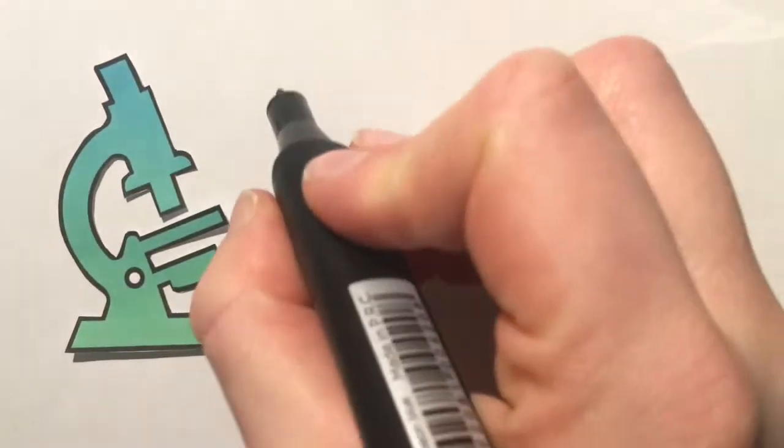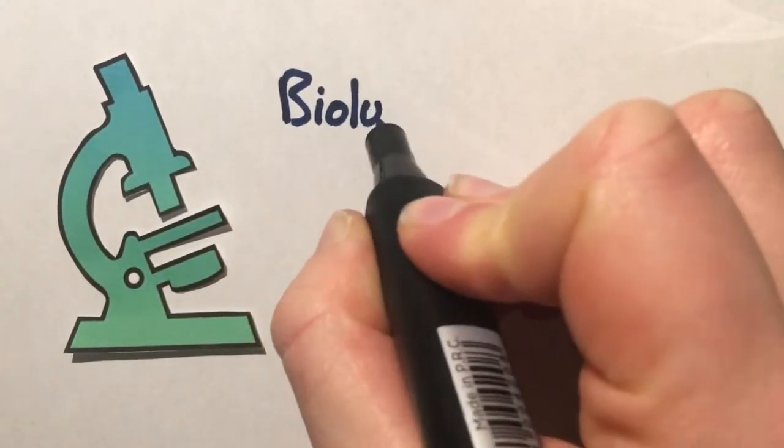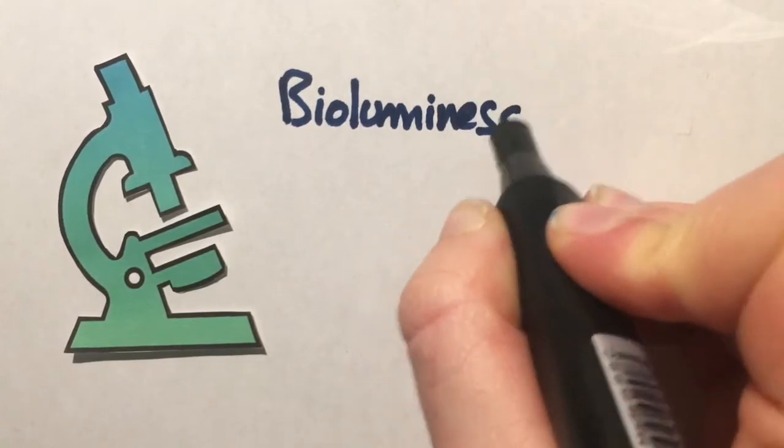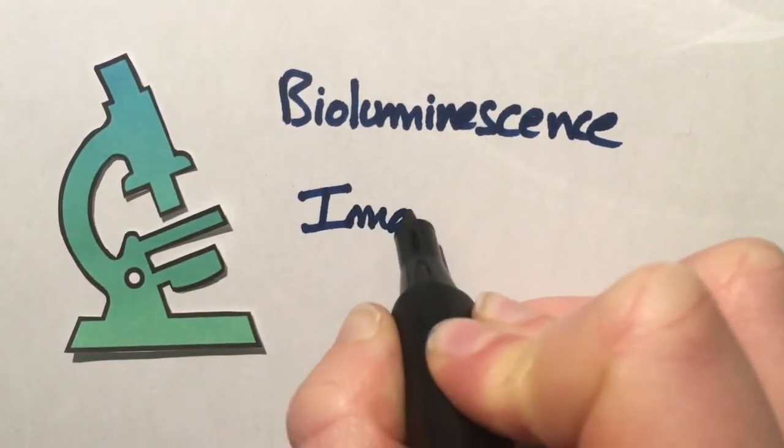In this video, we will see what is bioluminescence imaging. Bioluminescence is a chemical process in which visible light is emitted by living matter.